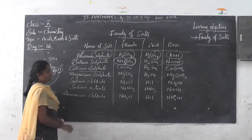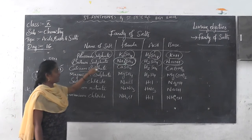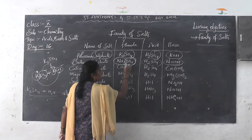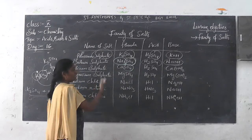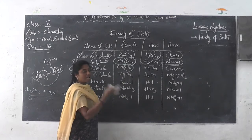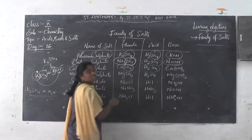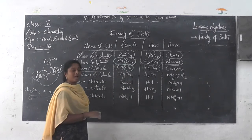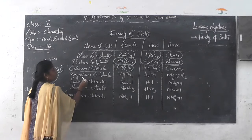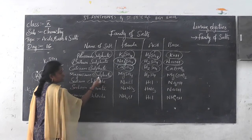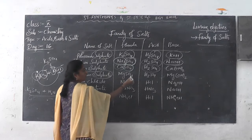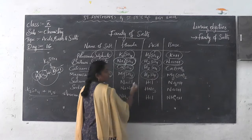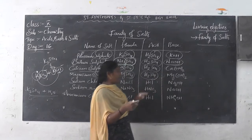Next one is calcium sulphate. The formula for calcium sulphate is CaSO4. What is the anion present? SO4 indicates sulphate family. So what is the acid? Sulphuric acid. And what is the base? Calcium hydroxide. In the same way, magnesium sulphate — here also SO4 is present, so it belongs to the sulphate family. The acid is sulphuric acid and the base is magnesium hydroxide.